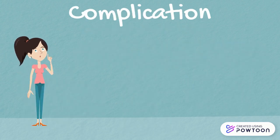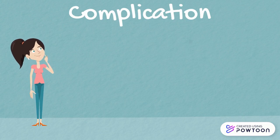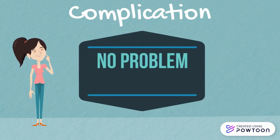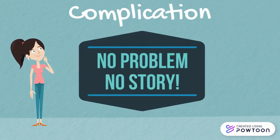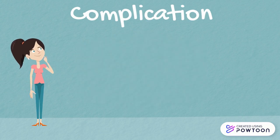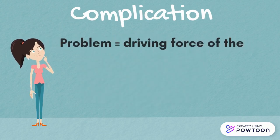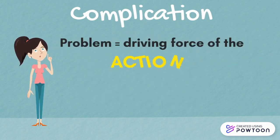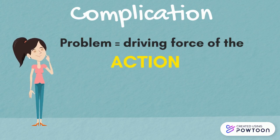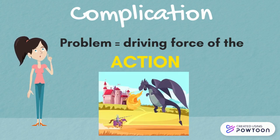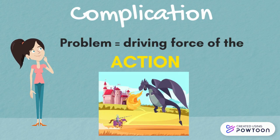The middle of a story, or the complication, can also be called the problem. Without a problem, there is no story. The problem, or complication, is the driving force of the action and the plot of the story. This problem is often a hurdle that the main character must overcome, and from this, key events in the story take place, forming the plot.